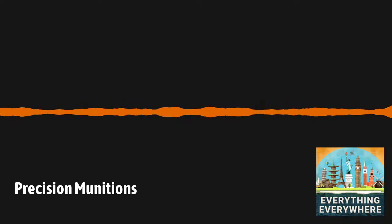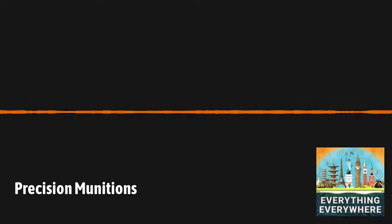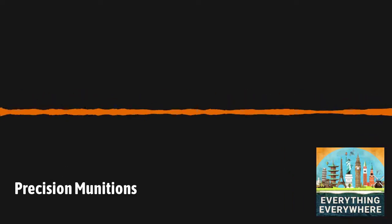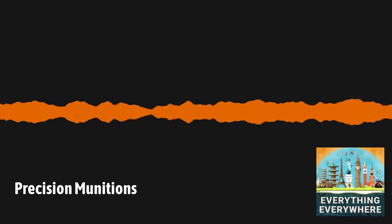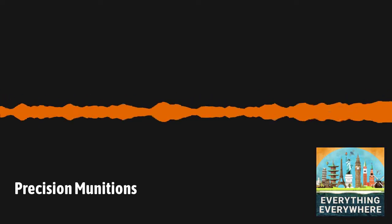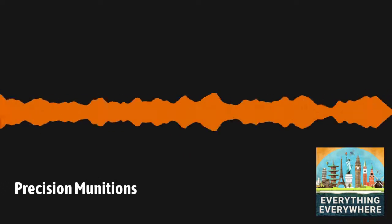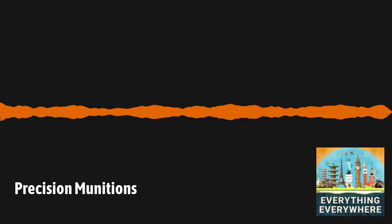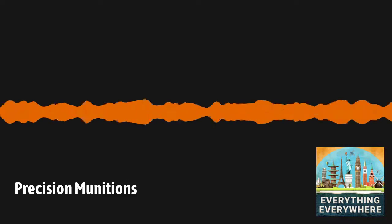During the Korean War, there were attempts at creating what was known as an electro-optical bomb, which again was just a bomb with a television camera that could be controlled by radio. This, too, did not work very well. The problem was that the ideas were there, but the technology just couldn't deliver.